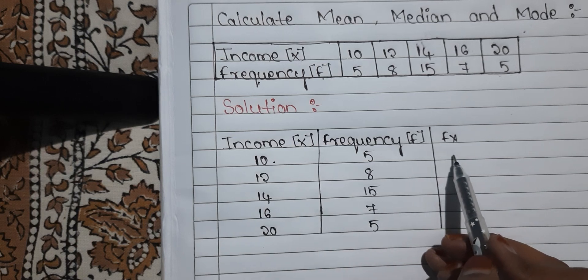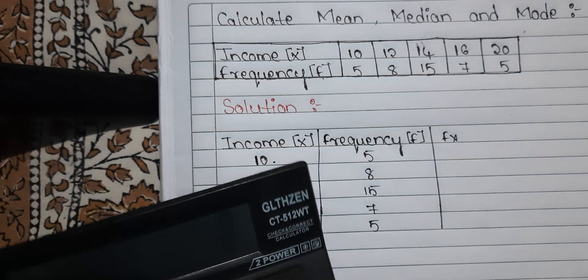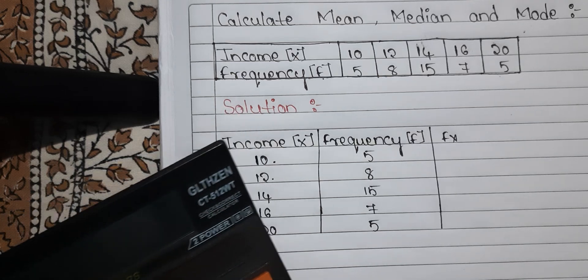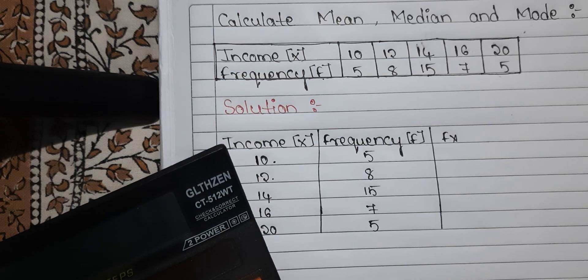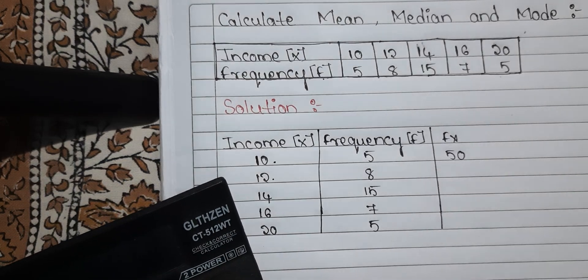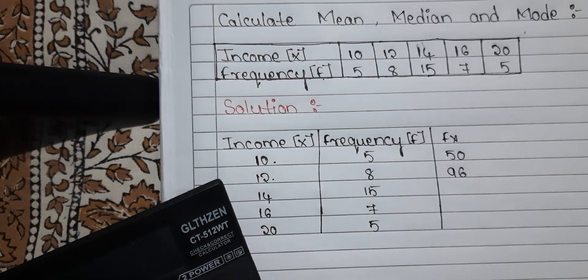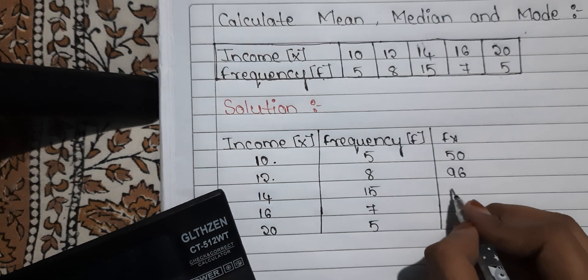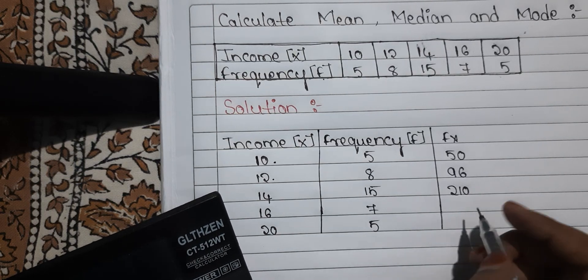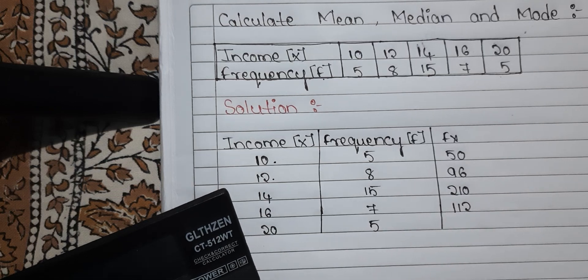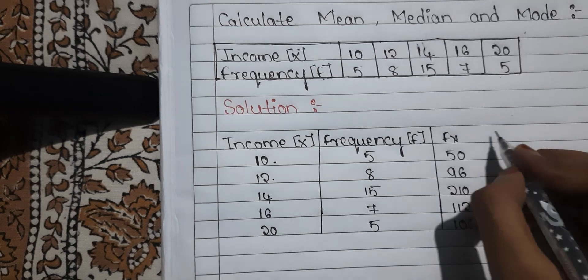10 into 5 — whatever the value is, that is FX. 12 into 8 — whatever the value is, that will be FX. Don't make any mistakes; just take a calculator and calculate. 10 into 5 is 50 — that is our FX. 12 into 8 is 96. Then 14 into 15 is 210. 16 into 7 is 112. 20 into 5 is 100. So this is our FX column.